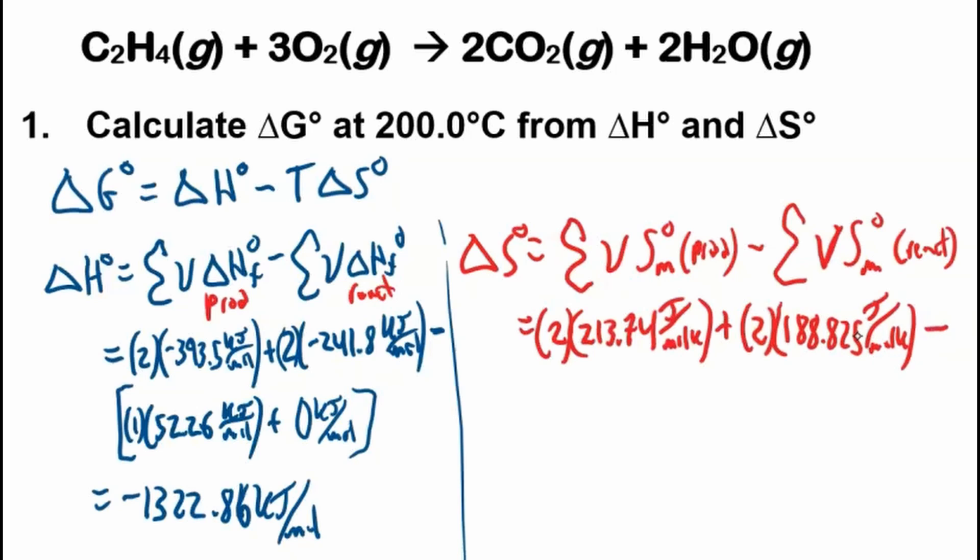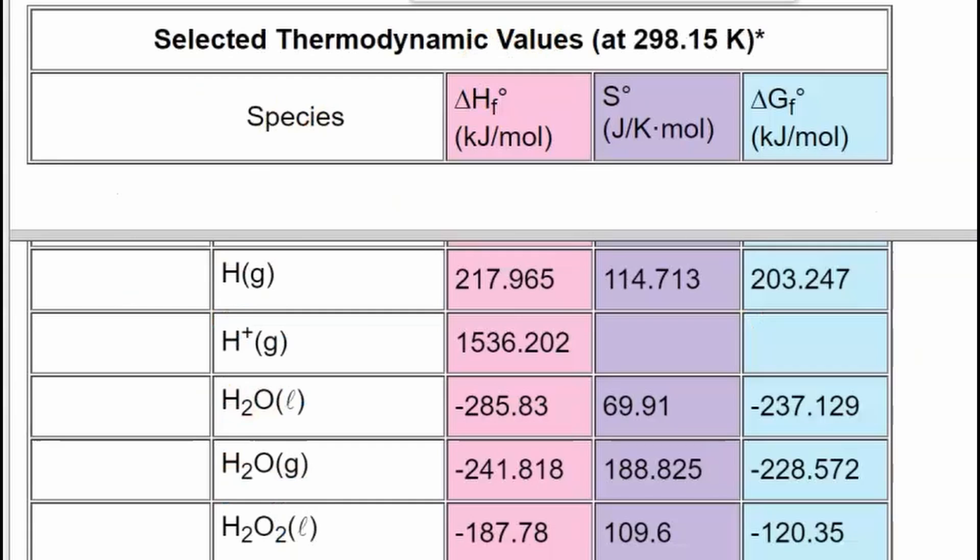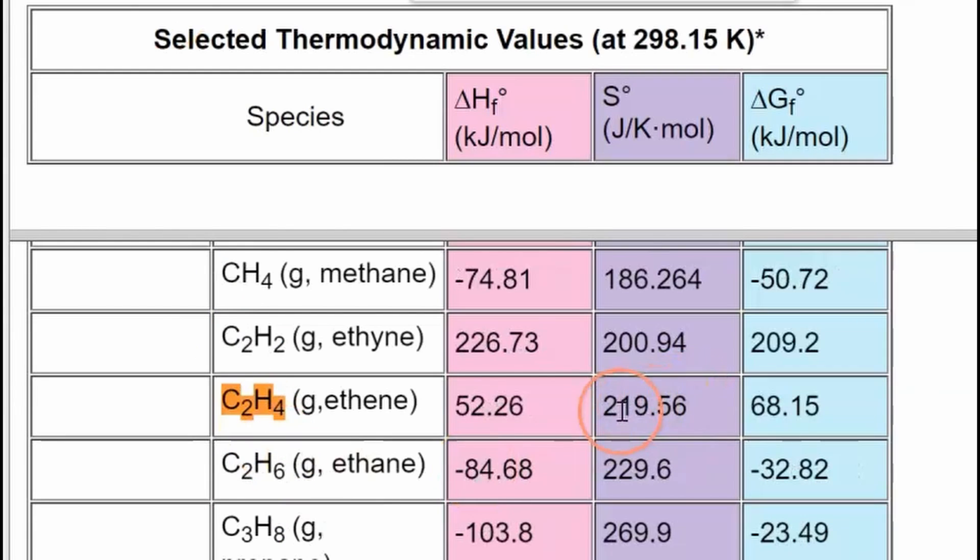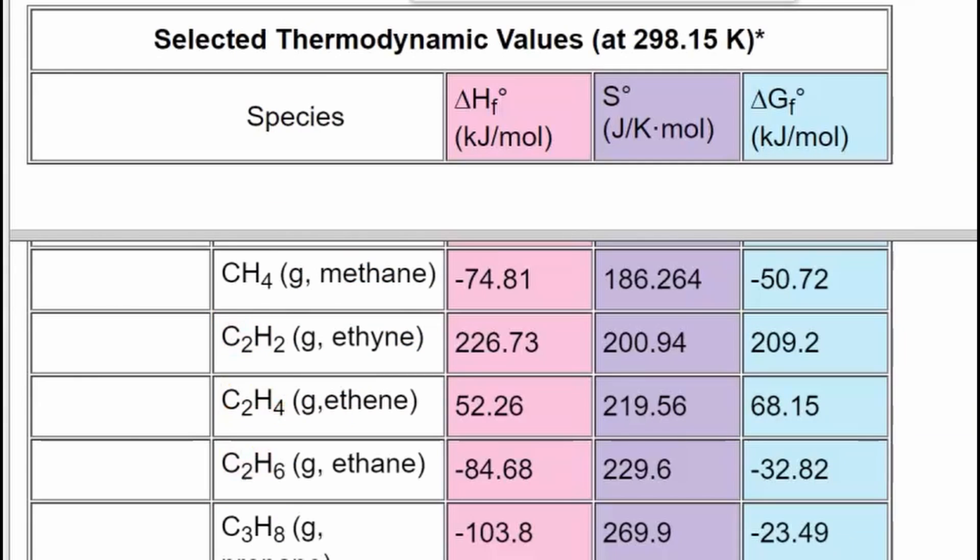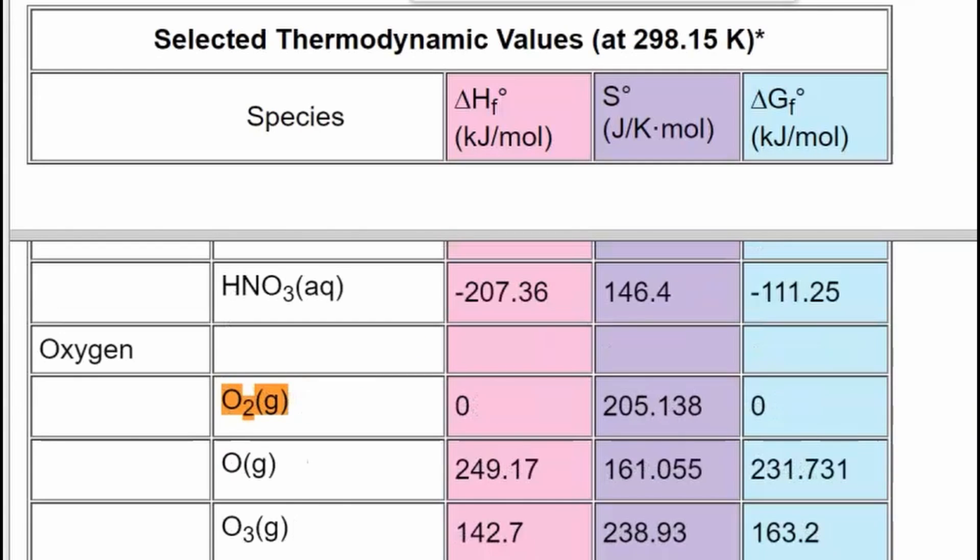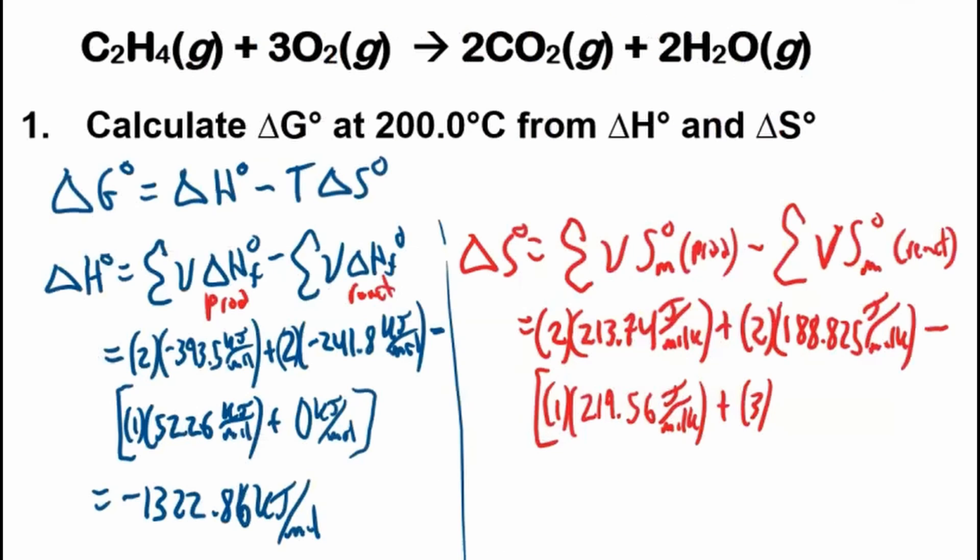Plus the molar entropy of formation of H₂O gas, so 2 times H₂O gas. Make sure it's the gas because it'll be a different number than the liquid. Here's our units, joules per Kelvin mole. 188.825 joules per mole Kelvin. Minus big bracket here.